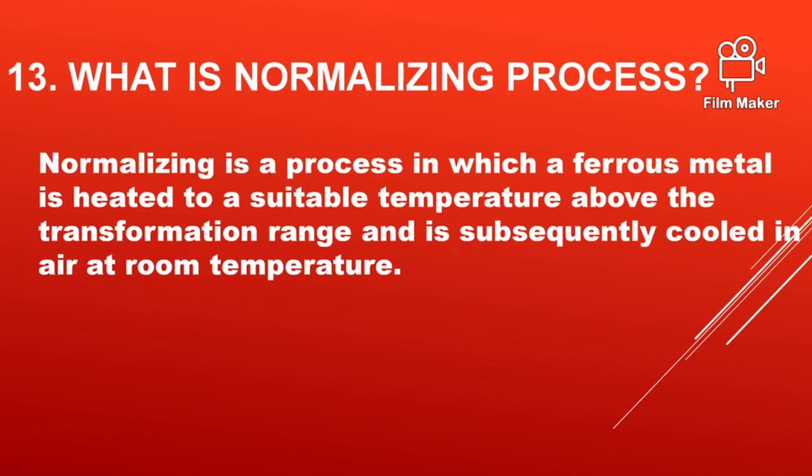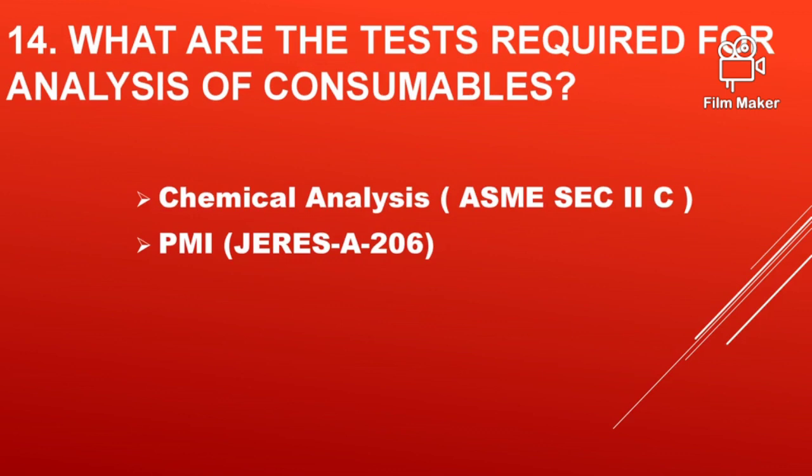What is the normalizing process? Normalizing is a process in which a ferrous metal is heated to a suitable temperature above the transformation range and is subsequently cooled in air at room temperature. Normally, it will be heated to 900 degrees centigrade for ferrous material.